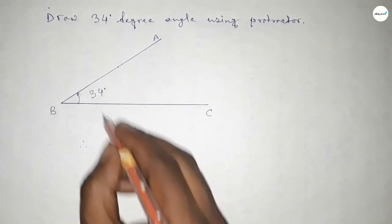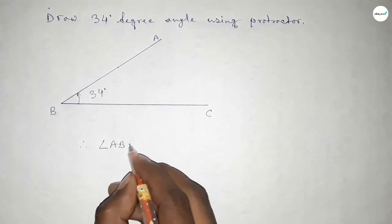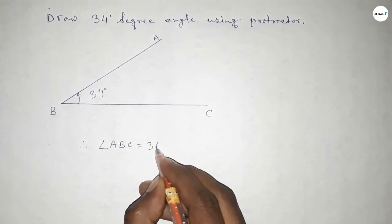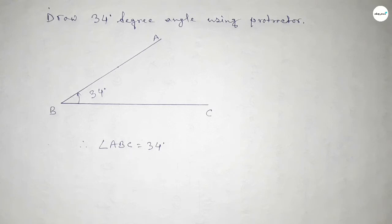Therefore, angle ABC equal to 34 degrees. That's all, thanks for watching. If this video is helpful to you, then share it with your friends.